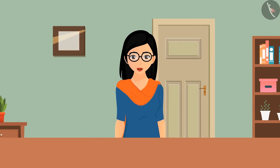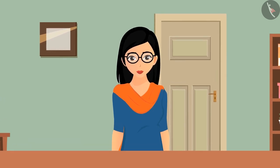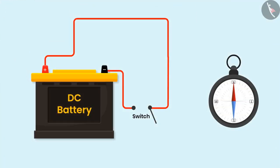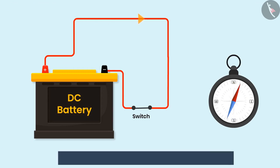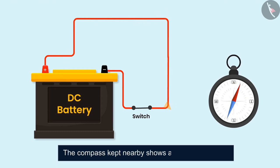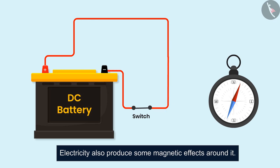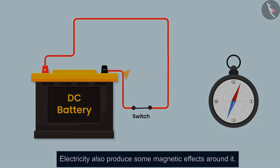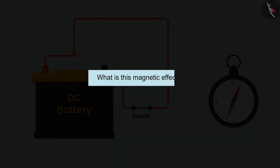Hello friends, today's video will not start with an example or an activity but rather with a story that changed the definition of science. When electric current was flowing through a metal wire, the compass kept nearby showed a kind of deflection. Then Oersted realized that electricity also produces magnetic effect. But what is this magnetic effect?